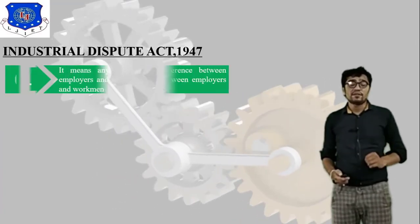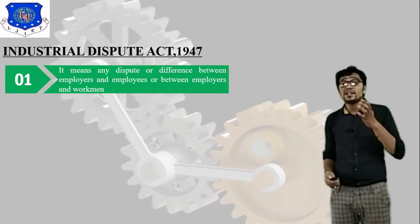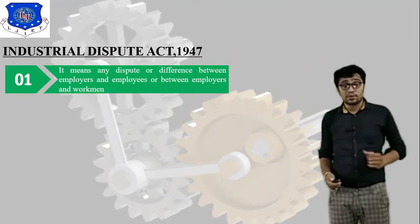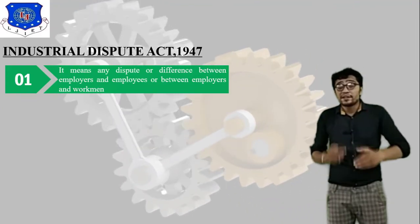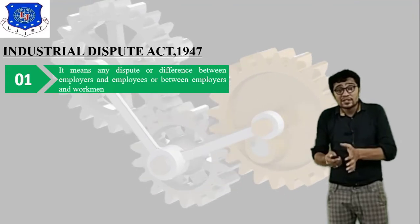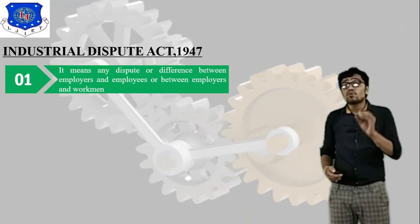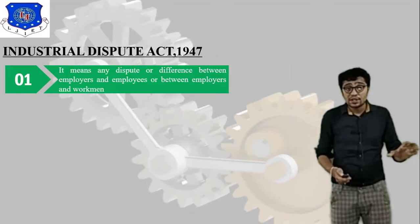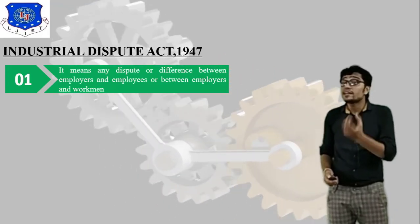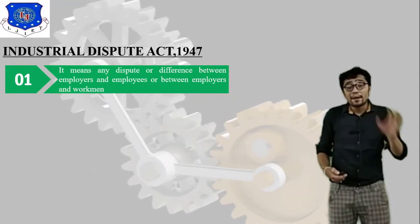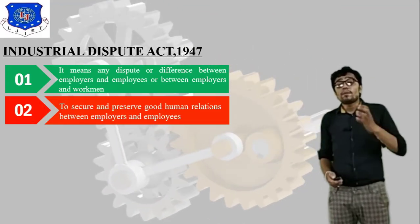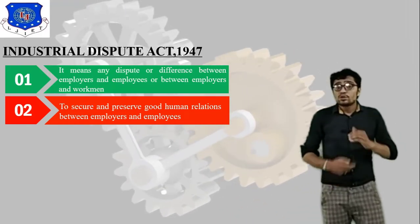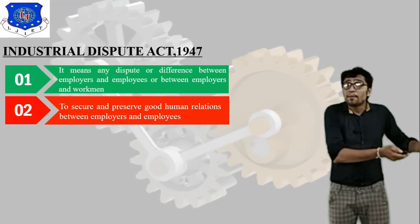Moving forward to Industrial Dispute Act 1947 — what do you understand by Industrial Dispute? Industrial Dispute is nothing but a dispute or difference between employers and employees, or between employers and workmen. The objective of Industrial Dispute Act 1947 is to secure and preserve good human relations between employers and employees.